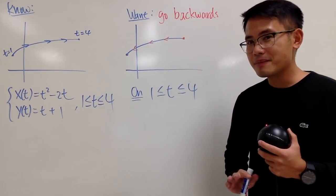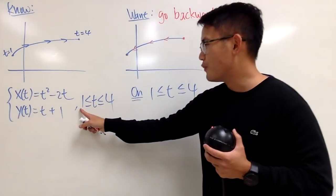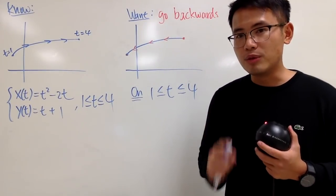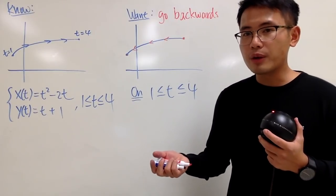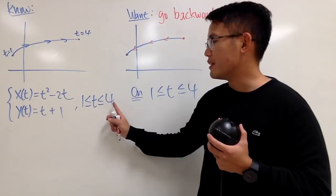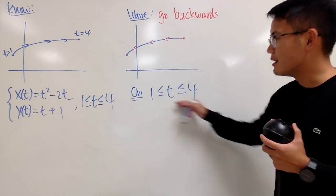And I know what you guys are thinking. Is it possible for us to just put a 4 here and then put a 1 here instead? No, we cannot do that. Because remember, suppose you are using a graphing calculator, the t-minimum has to be always smaller than the t-maximum, right?